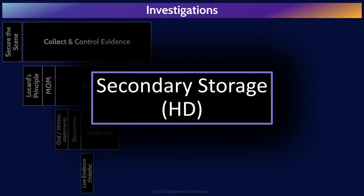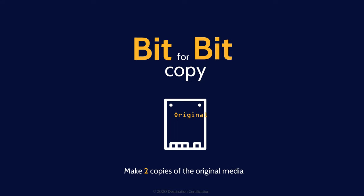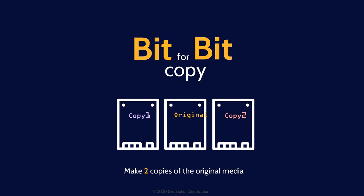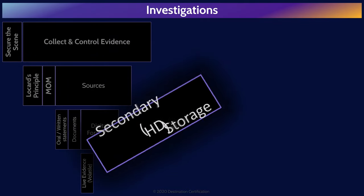An important point to remember is that when an investigator obtains a hard drive, they do not conduct any of their investigations on the original drive. Rather, they make two bit-for-bit copies, which they verify via hashing, and any investigations are conducted only on one of the copies. This helps to ensure that any evidence collected will be admissible.